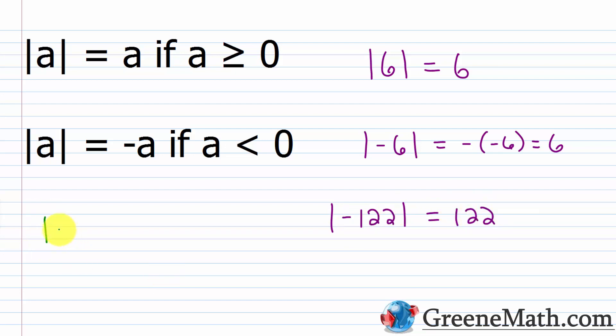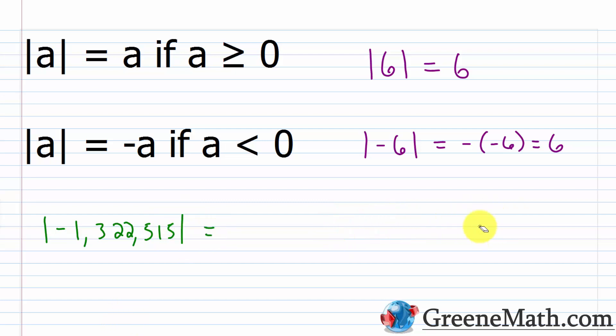Similarly, if I had the absolute value of negative 1,322,515, what would I do? I would just make the number positive — it's 1,322,515. If it's zero or a positive number, it's just the number. If it's a negative number, just make it positive. That's all you really need to remember about finding the absolute value of a number. It's very, very simple.